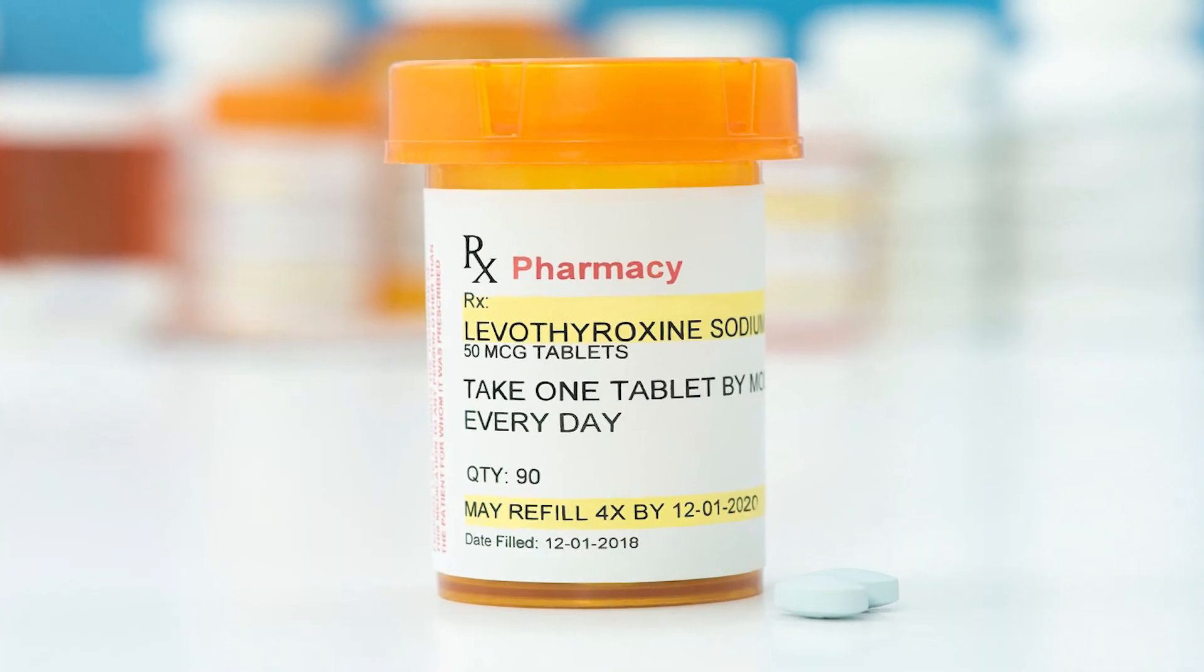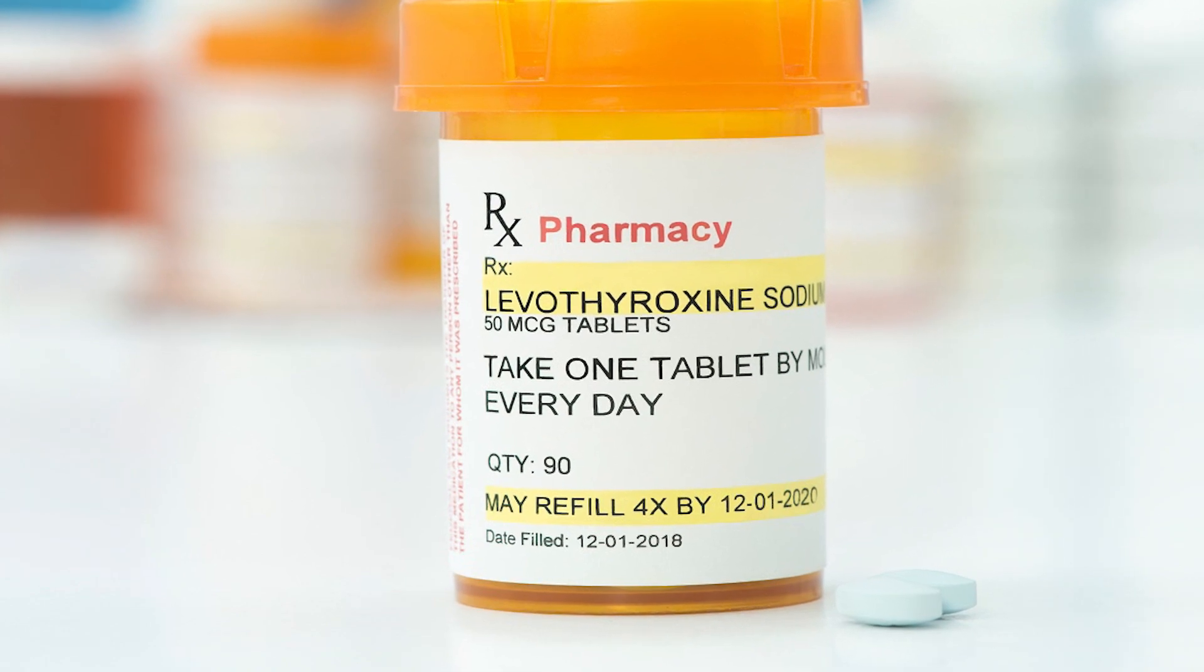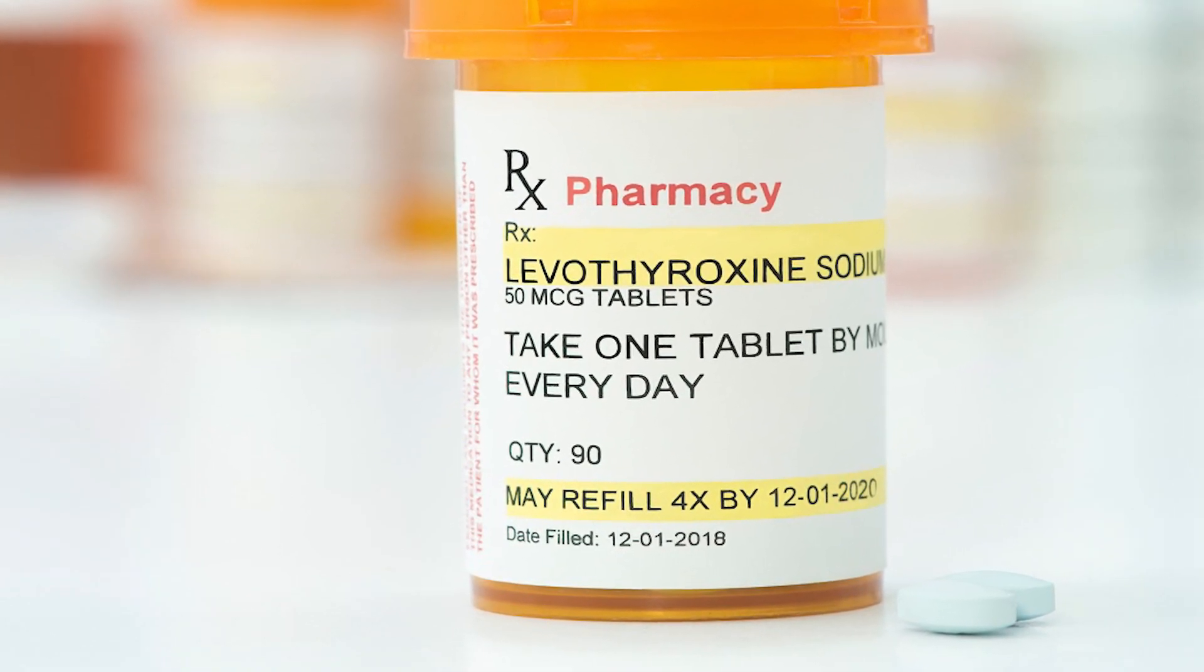Fortunately, an underactive thyroid is easily treated. The first port of call is T4 replacement medication, and that's called levothyroxine. This is a daily tablet and simply replaces the T4 hormone which is not being produced by your body. The aim is to get your thyroid stimulating hormone into the ideal range, which tends to be the lower half of the normal range.